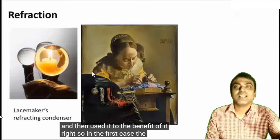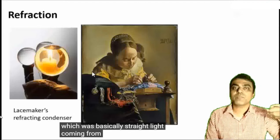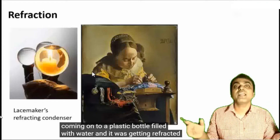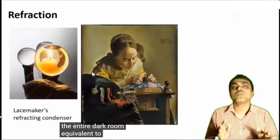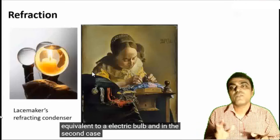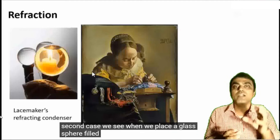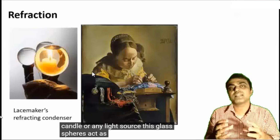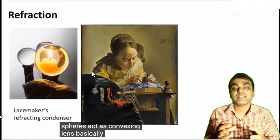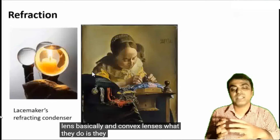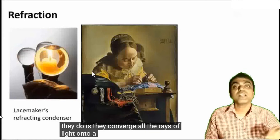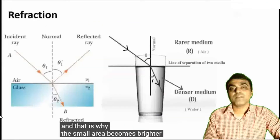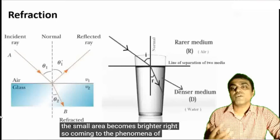These two examples used the phenomenon of refraction — they capitalized on this phenomenon of light and used it to their benefit. In the first case, light from the sun came onto a plastic bottle filled with water and was refracted to illuminate the entire dark room equivalent to an electric bulb. In the second case, glass spheres filled with water act as convex lenses, converging all rays of light onto a small focal point, making the small area brighter.